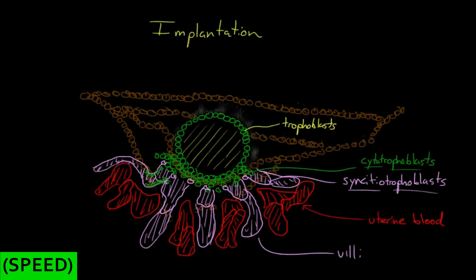So over time, these structures continue to grow. You get more cytotrophoblasts that line the edges of these villi as they creep out into the endometrium. And within these villi, you start to develop little fetal blood vessels.